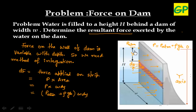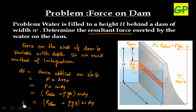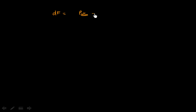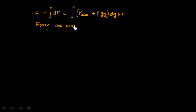Now we need integration. If we sum all these elemental forces, we get the total force on the wall. Integrating dF = (P_atmospheric + ρgy) × W × dy, with y going from 0 to H, and taking W as a constant outside the integral, we get F = W × ∫₀ᴴ (P_atmospheric + ρgy) dy.